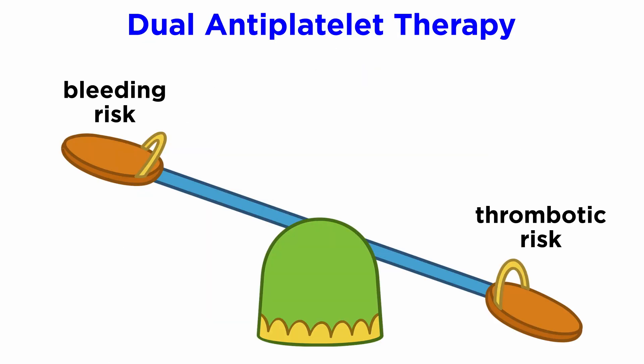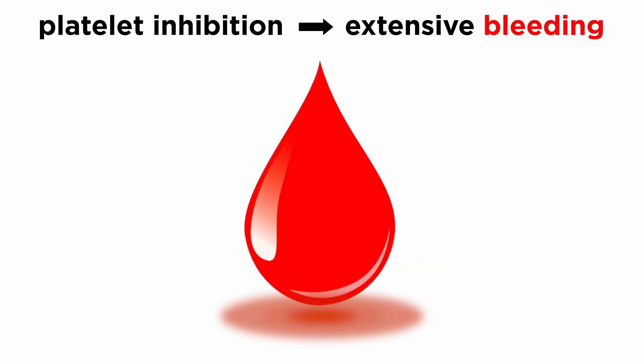It's important to be aware that bleeding risk and thrombotic risk are a critical seesaw-like balance that must be managed carefully, as we mentioned at the beginning of this tutorial. On either extreme lies a particular danger. Extensive bleeding can arise from platelet inhibition because the ability of the body to generate blood clots is reduced.